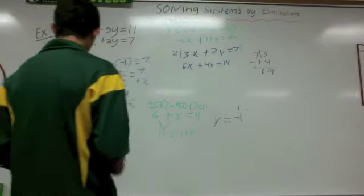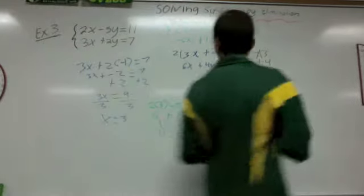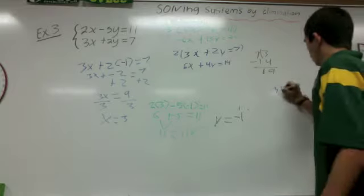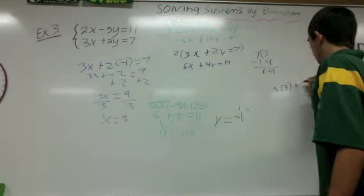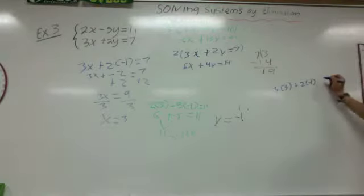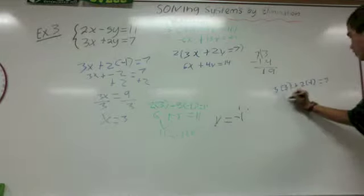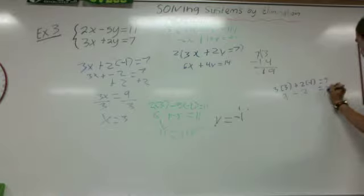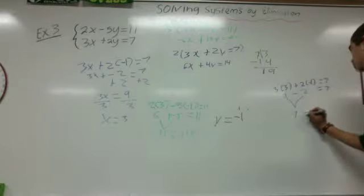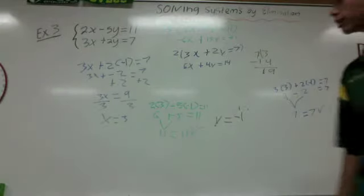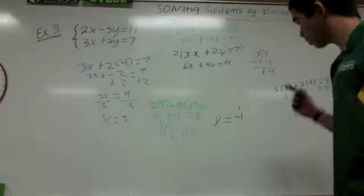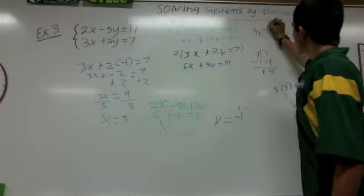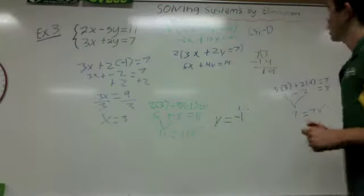Now we have to check the second equation. We're going to do 3 times 3 plus 2 times negative 1 equals 7. That's 9 minus 2 equals 7, and these two do end up equaling 7. So both equations are correct, meaning both answers are correct. So the solution is (3, negative 1), and that's example 3.